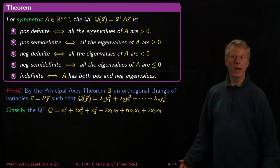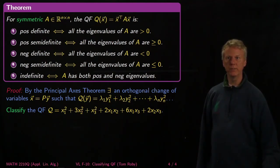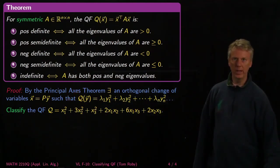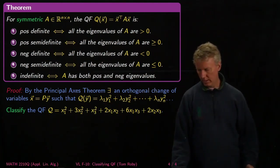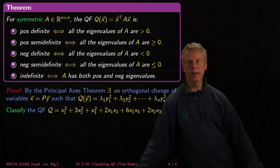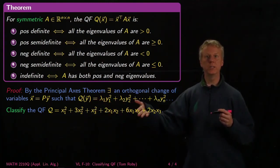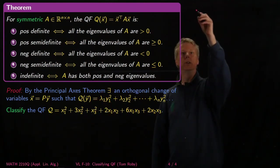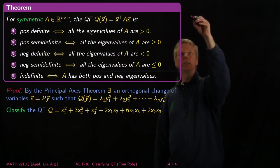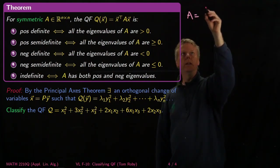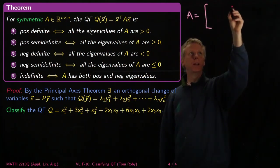So suppose I ask you to do one specific classification. Here's a concrete quadratic form. We want to classify it. I'm going to write this one all out by hand. First of all, what's the matrix A that it corresponds to?